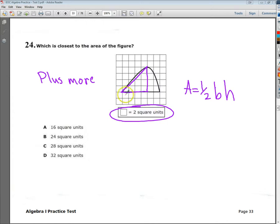So my base here would be 1, 2, 3, 4. My height here would be 1, 2, 3, 4. So the area of this figure, or this triangle anyway, would be 1 half of 16 or 8. But I need to multiply it by 2 to give me 16. So that's a good starting point.